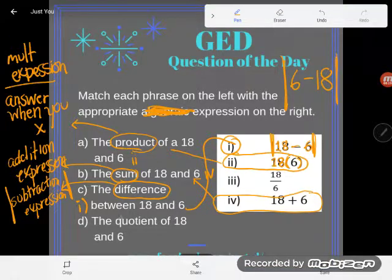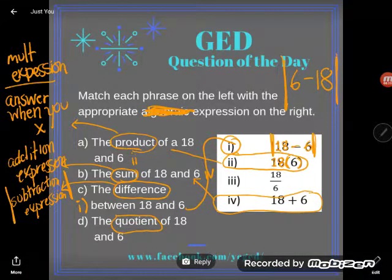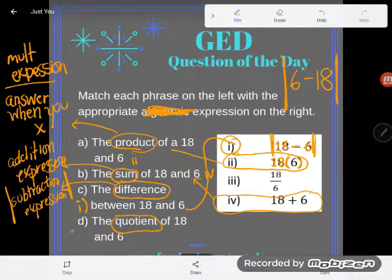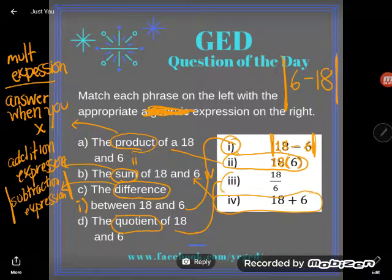Finally, d is obvious. The quotient of 18 and 6. Quotient is a division expression, it's the answer when you divide. I see here the quotient of 18 divided by 6. That's 3, or iii.